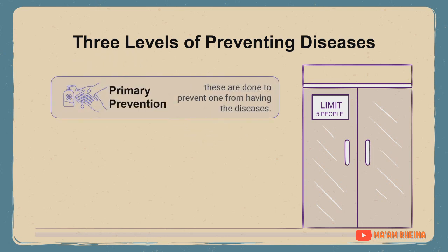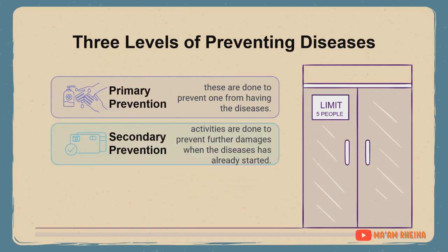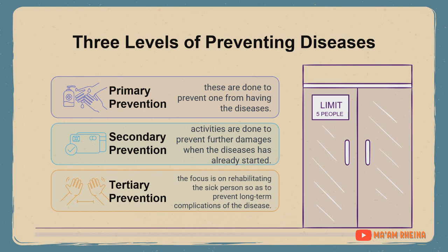There are three levels in preventing diseases. First is primary prevention — these are done to prevent one from having the disease. Next is secondary prevention — activities are done to prevent further damage when the disease has already started. Then tertiary prevention — the focus is on rehabilitating the sick person so as to prevent long-term complications of the disease.